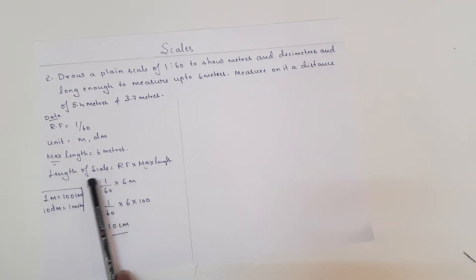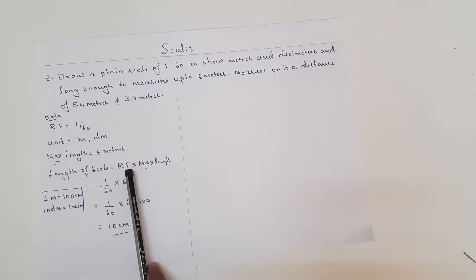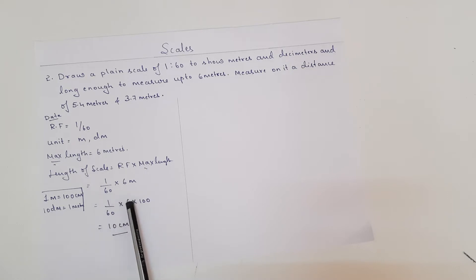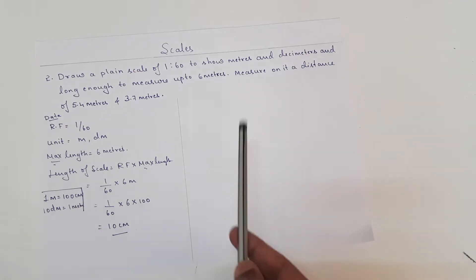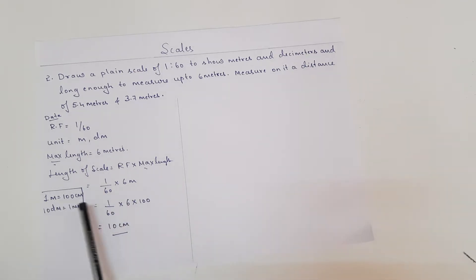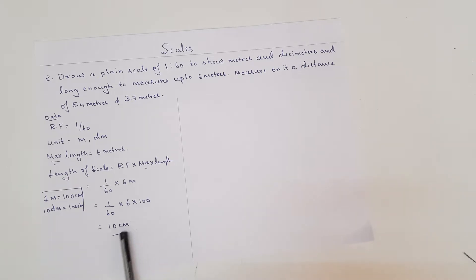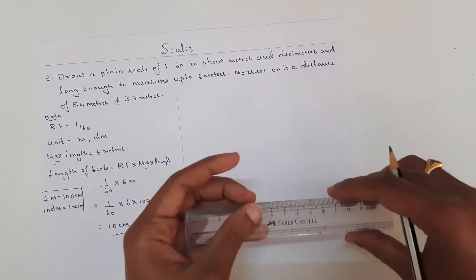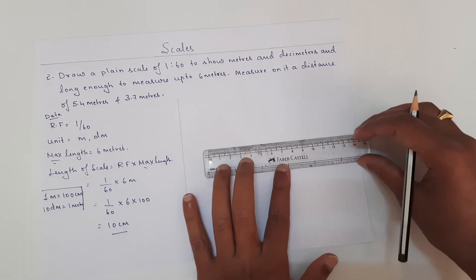To find the length of the scale in centimeters, we use: RF × maximum length = (1/60) × 6 meters. Converting 1 meter to centimeters gives 100 cm, so (1/60) × 6 × 100 = 10 centimeters. Therefore, I am going to draw a line which measures 10 centimeters.